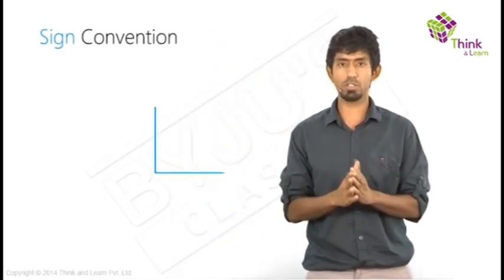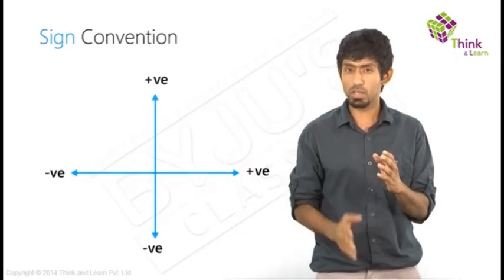Now one little refresh about the sign convention. What was it? Anything up is positive, anything right is positive, anything left is negative, anything down is negative.